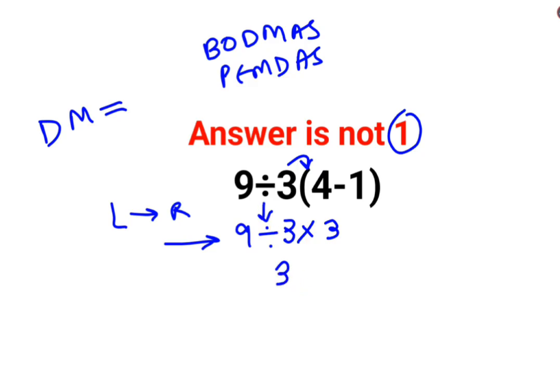So 9 divided by 3 is 3, multiplied by 3. The answer for this question is supposed to be 27.